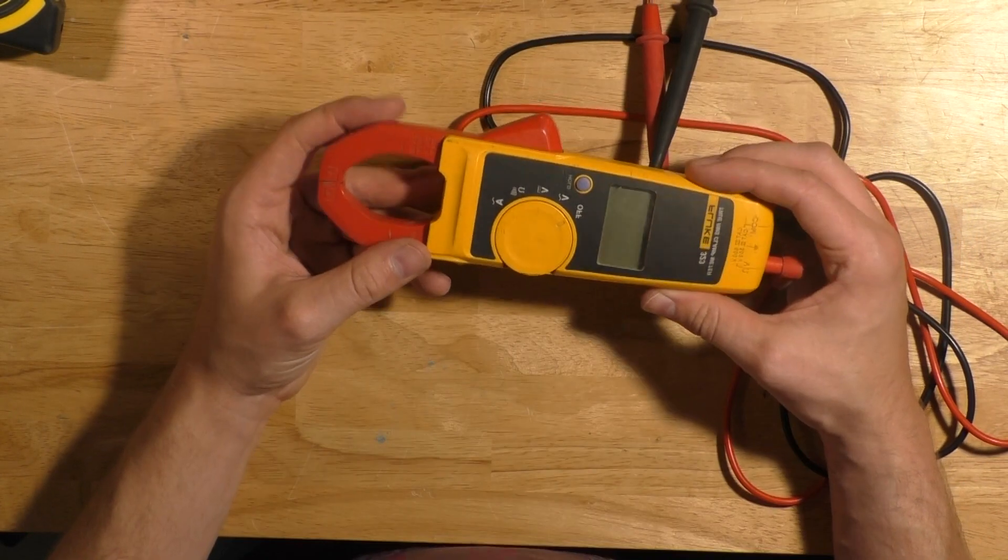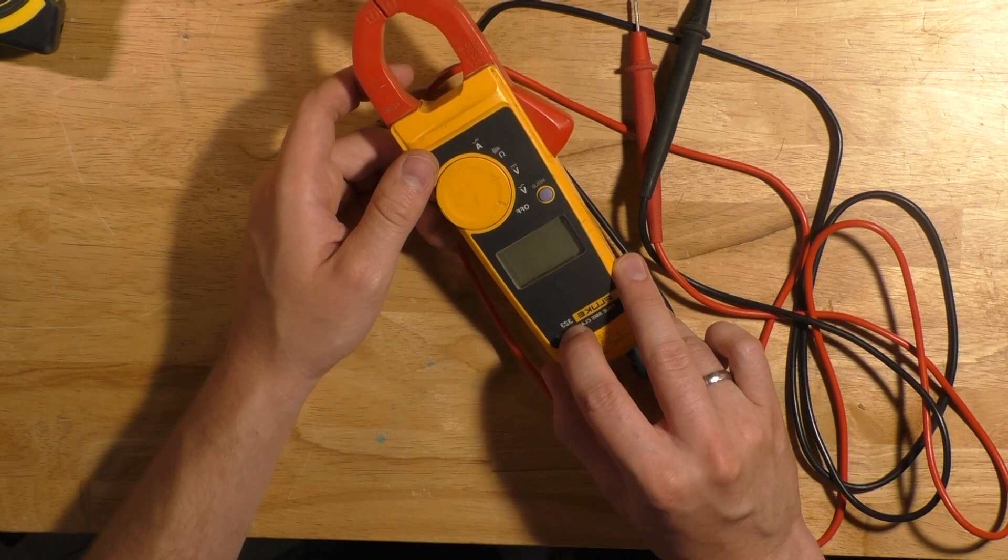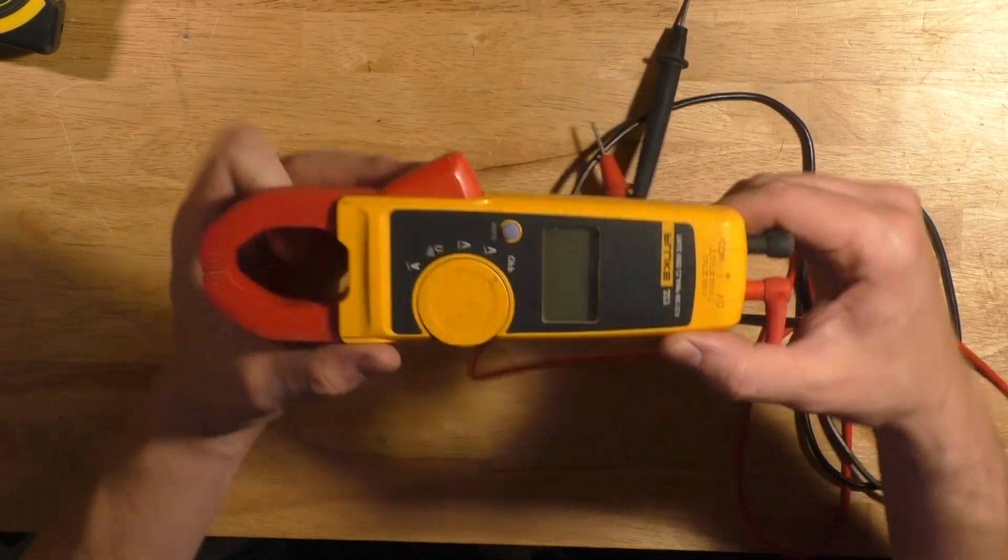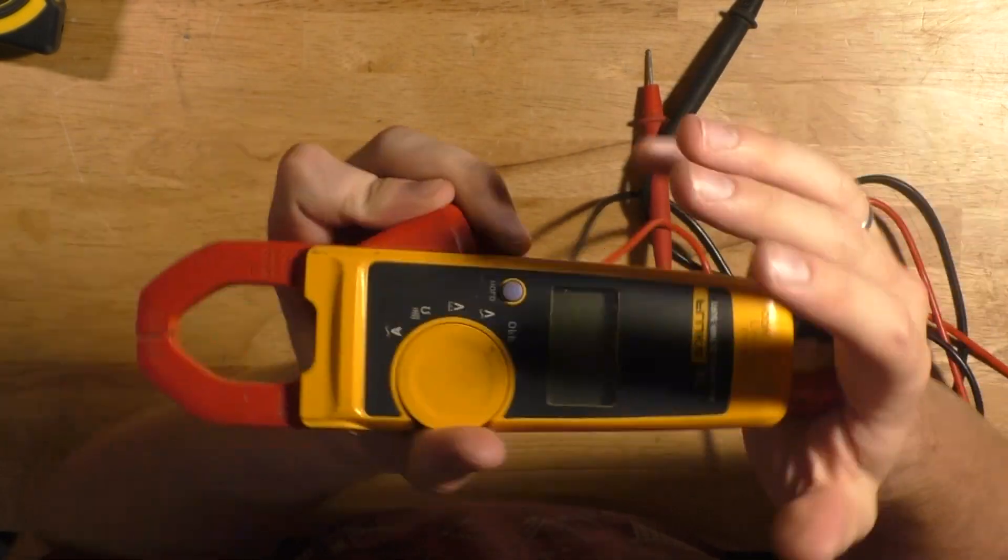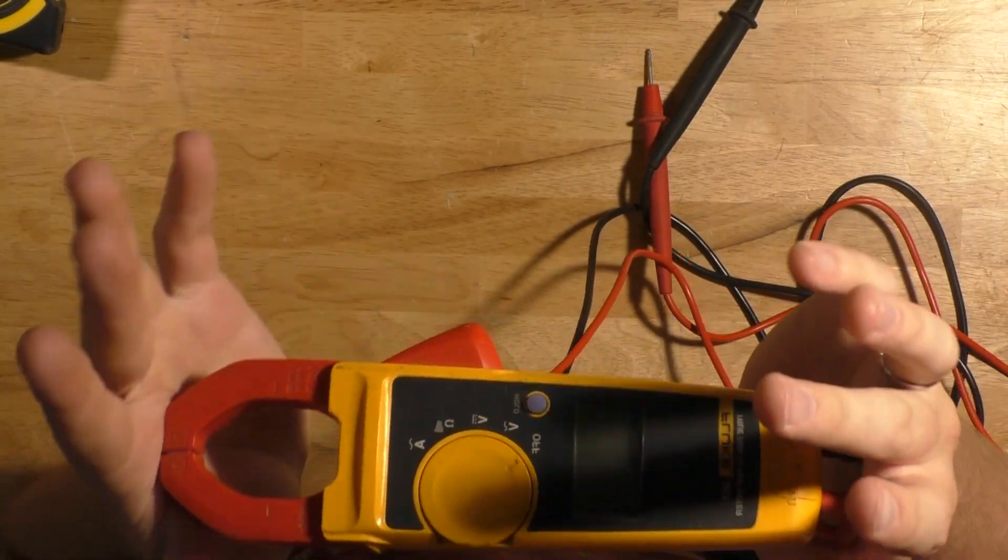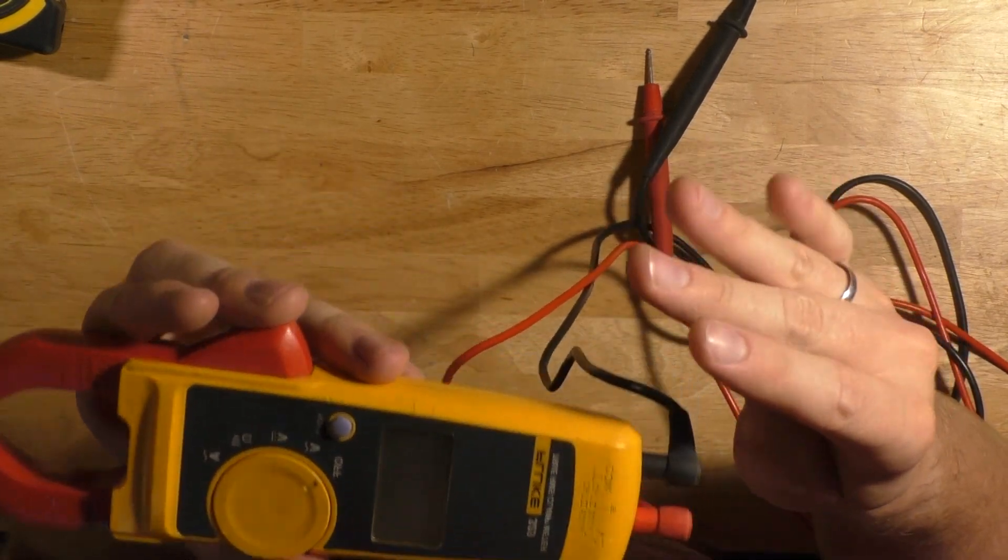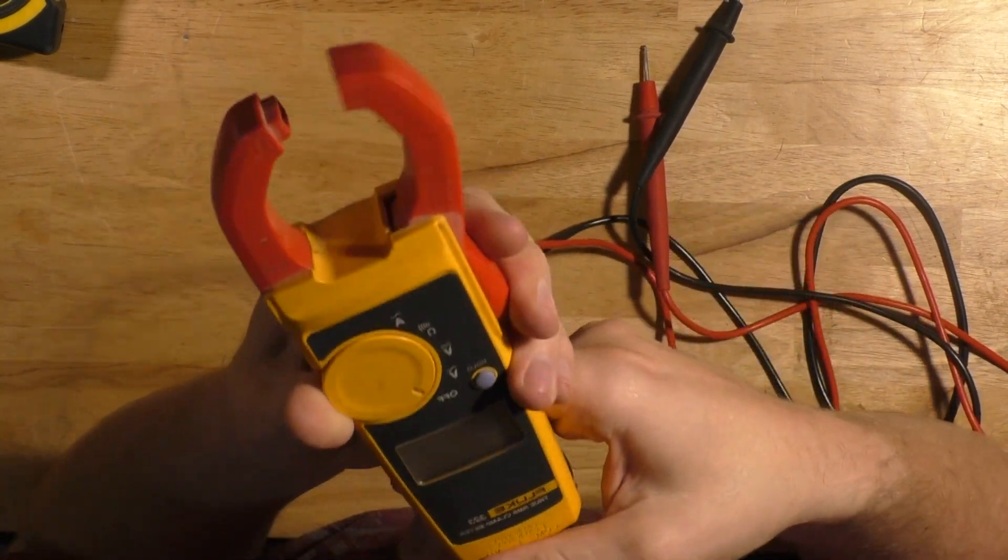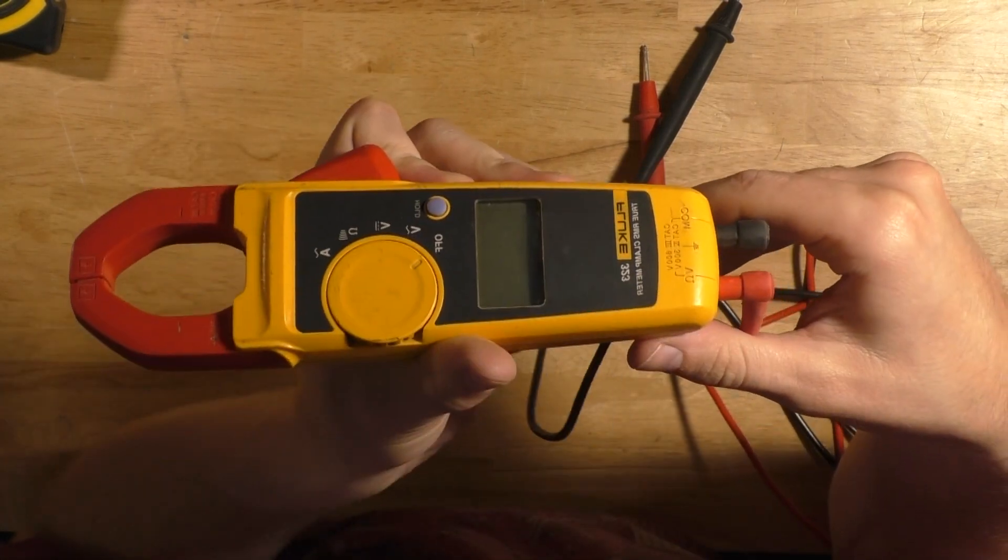My personal go-to clamp-on ammeter is a Fluke 323 which you can sometimes get on sale for as low as $130, but I am putting the price of a good meter at $200 for our tally since that is probably closer to what you would pay. Also note that most electricians use a clamp style meter so you should probably get one of those for your early years as well.